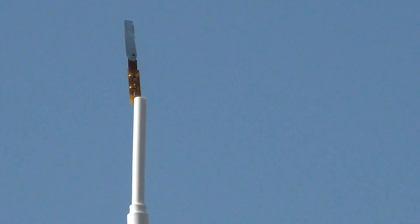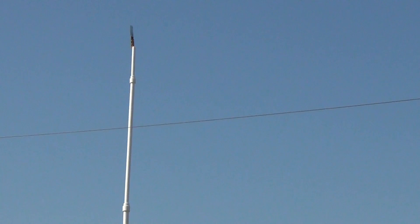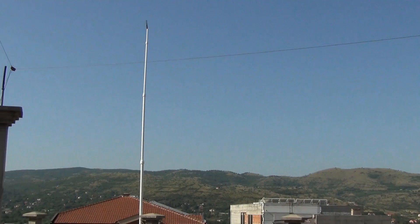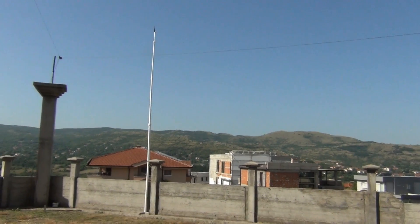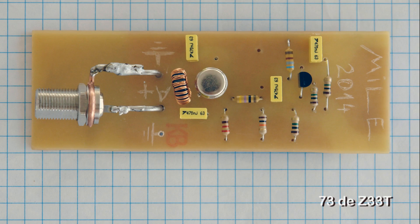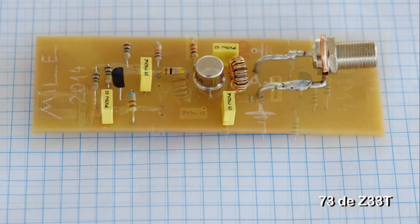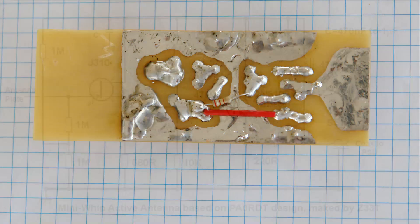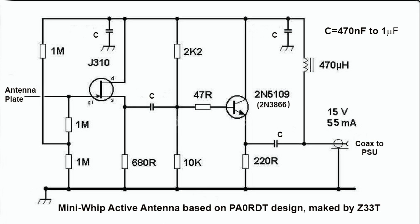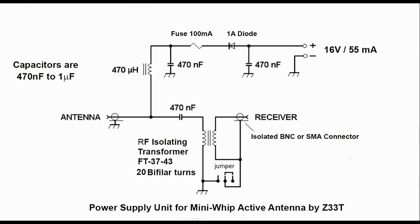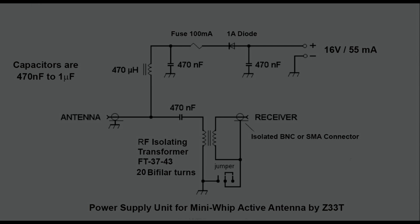And this is my MiniWhip active antenna on top of the 6.5 meter plastic rod made from water pipes, erected in my backyard.